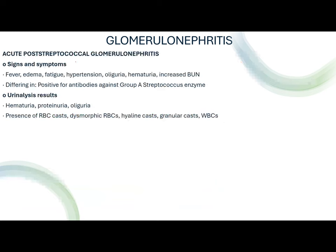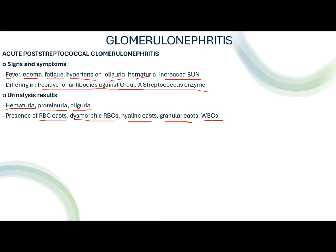Symptoms of acute post-streptococcal glomerulonephritis include fever, edema, fatigue, hypertension, oliguria, hematuria, and increased BUN. To identify this, the patient is positive for antibodies against Group A streptococcus. In urinalysis, you would find hematuria, proteinuria, decreased urine output, RBC casts, dysmorphic RBC, hyaline casts, granular casts, and even white blood cells.